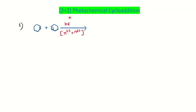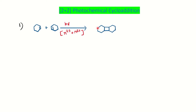2+2 photochemical addition — what does it mean? It is photochemically allowed. We have observed that 4+2 cycloaddition is thermally allowed, and we covered the details in the previous video. Here you can see two cyclohexene molecules under photochemical conditions. The two double bonds undergo 2+2 cycloaddition — that is π2s + π2s — which is suprafacial, allowed, and syn addition, forming a product under photochemical conditions.